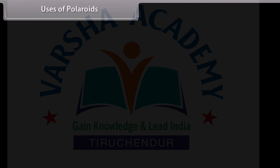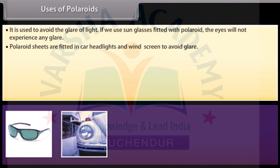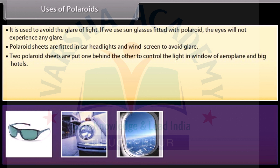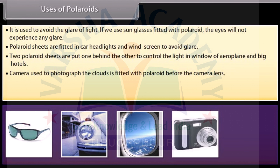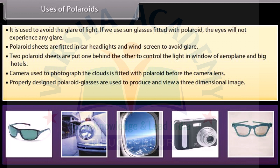Uses of polaroids. Some important uses of polaroids are: it is used to avoid the glare of light — if we use sunglasses fitted with polaroid, the eyes will not experience any glare. Polaroid sheets are fitted in car headlights and windscreens to avoid glare. Two polaroid sheets are put one behind the other to control light in windows of aeroplanes and big hotels. Cameras used to photograph clouds are fitted with a polaroid before the camera lens. Properly designed polaroid glasses are used to produce and view three-dimensional images, and they are also used for studying optical properties of metals.